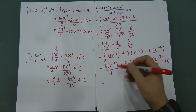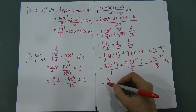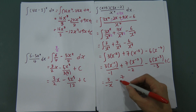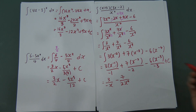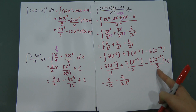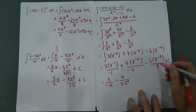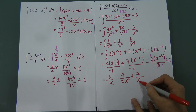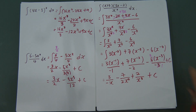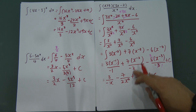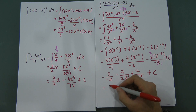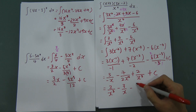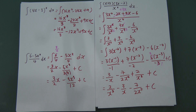Rearranging: x⁻¹ becomes 1/x, so the first term is 3 over negative x, which is negative 3/x. The second term has power negative 2, giving minus 7/(2x²). The third term: two negatives make a positive, and simplifying gives plus 2/x³. So the final answer can be written as 2/x³ minus 3/x minus 7/(2x²) plus C.